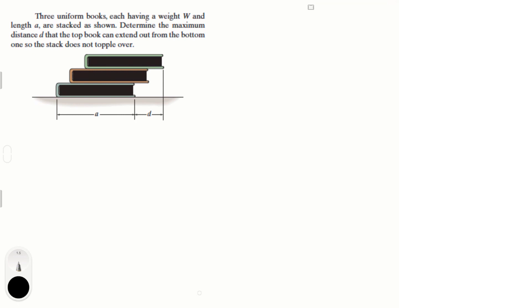Alright guys, let's do this problem that says we have 3 books, each having a weight and a length A, and they're stacked as shown. Determine the maximum distance D that the top book can extend out from the bottom one so that the stack does not topple over.